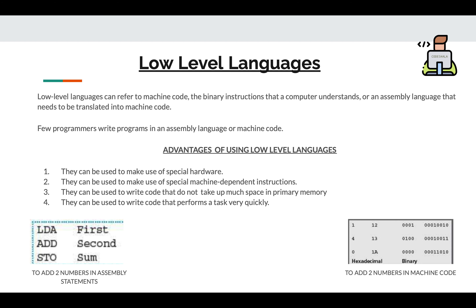You might be wondering: when a high level language has so many perks, why do people even use low level languages? Low level languages can refer to machine code — the binary instructions that a computer understands — or an assembly language that needs to be translated into machine code.